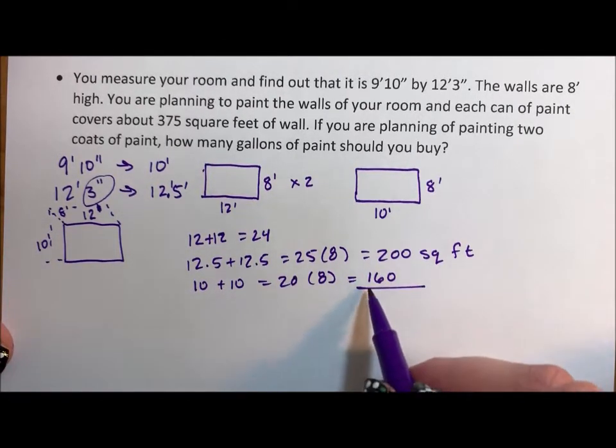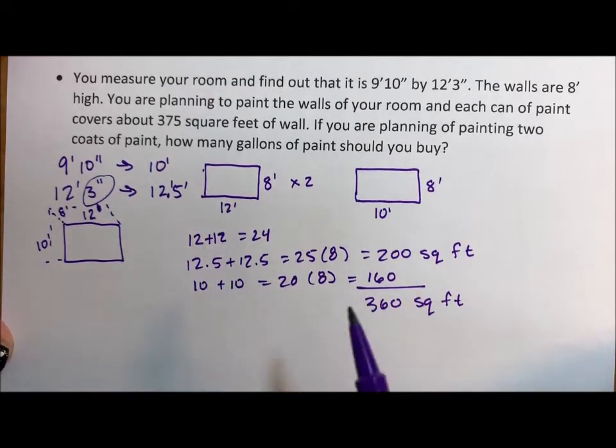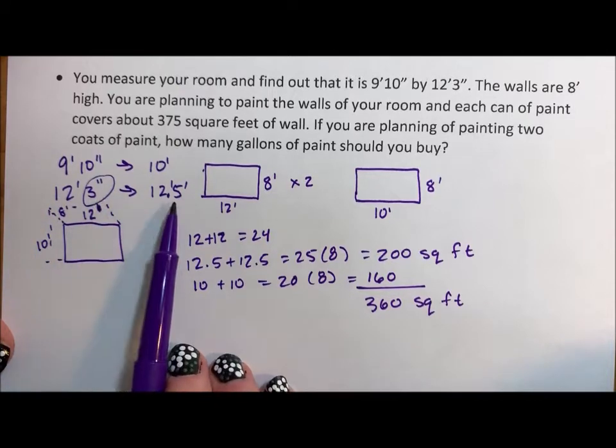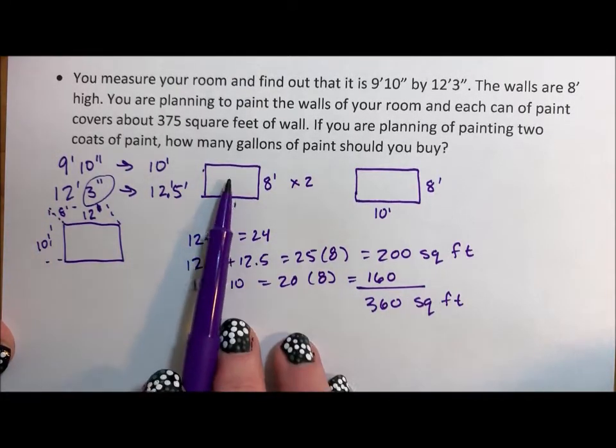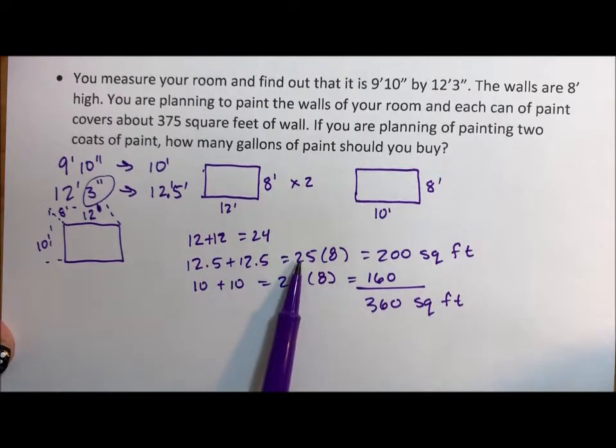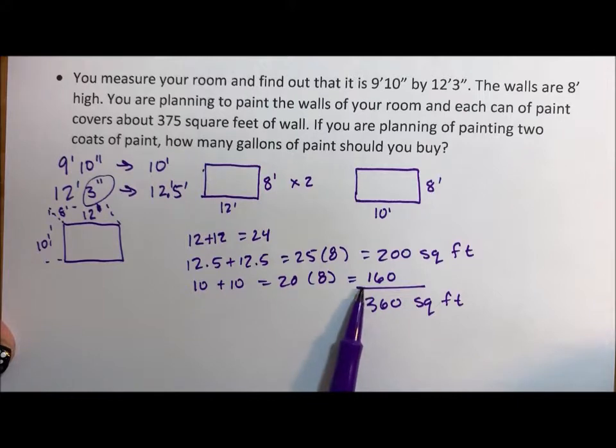So what I did was I took the 12.3, made it 12 and a half, 12 and a half each of the two. 12 and a half plus 12 and a half is 25. 25 times 8 is 200. 10 plus 10 is 20 times 8 is 160. I added those together.